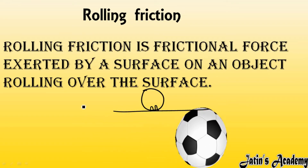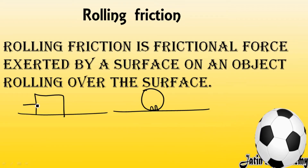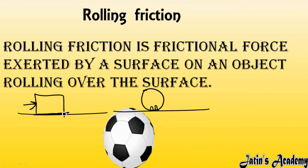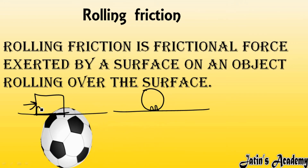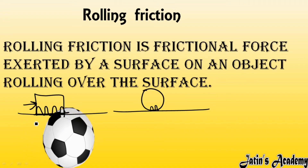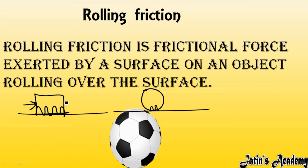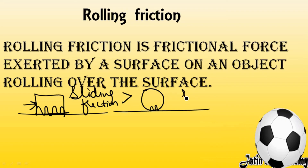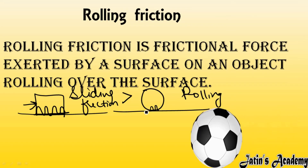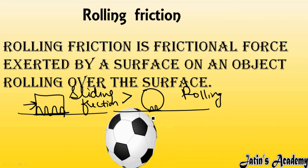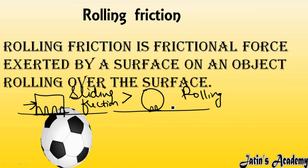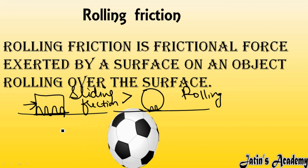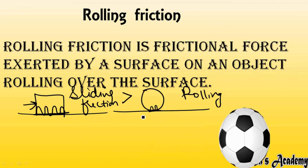In sliding friction, if you apply force on a box, the box has more physical contact with the surface. When the box has more physical contact with the surface, irregularities between the surface and the box are also more. If irregularities are more, interlocking is more, which means sliding friction is always more than rolling friction. In rolling friction, only some part of the object is in contact with the surface, so less interlocking occurs. Therefore, it is easier to roll any object on a surface than to slide it — rolling is easier compared to sliding friction.